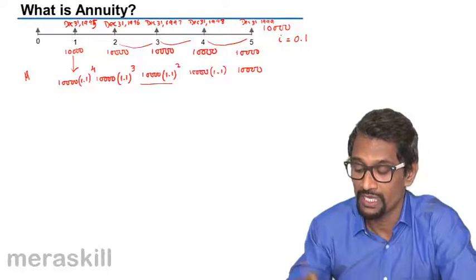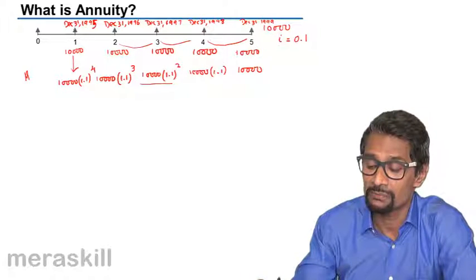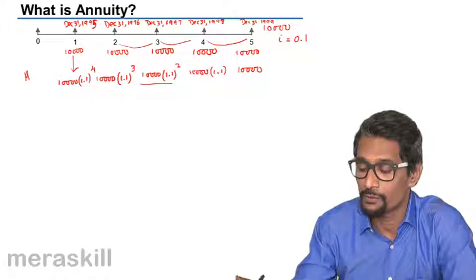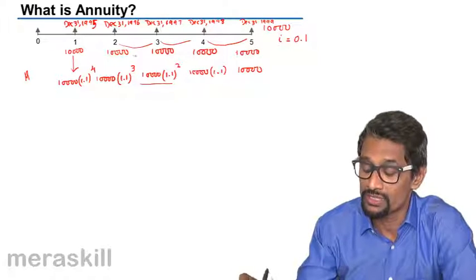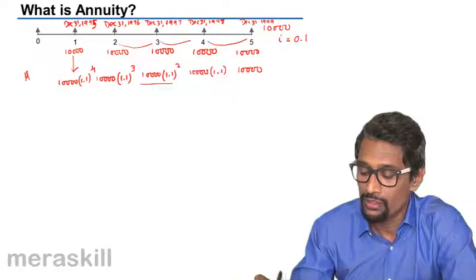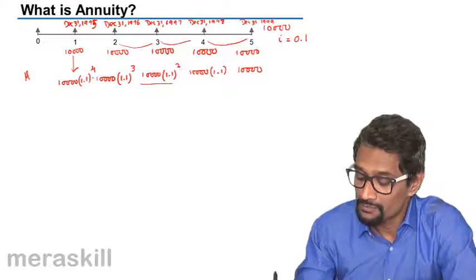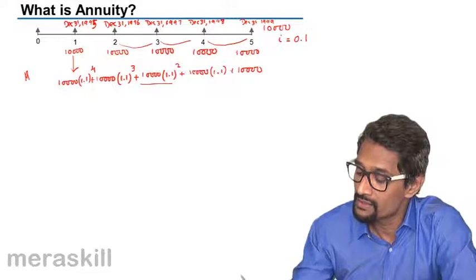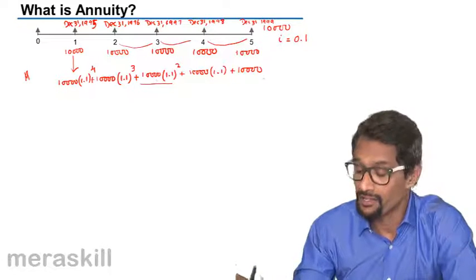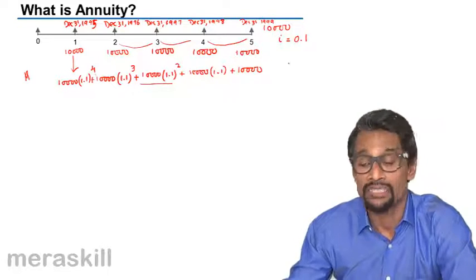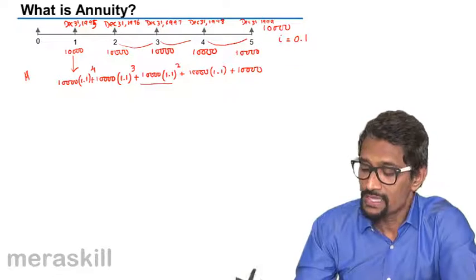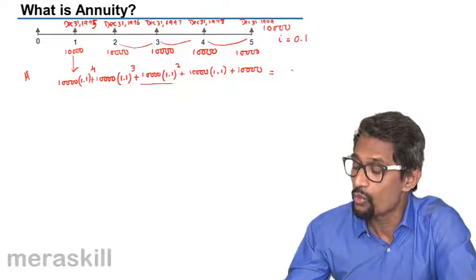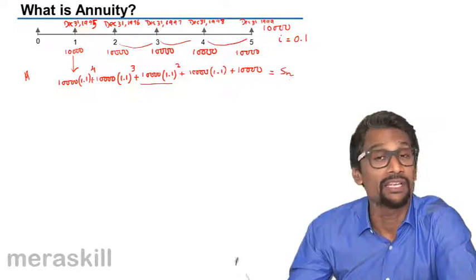So the dates run: 1998, 1997, 1996, and 1995 — sorry, that should be 1995. Starting from December 31st 1995, at the end of one year, for a period of five years, we keep depositing ten thousand rupees. The accumulated amount of all these is what you get at the end of the entire five-year tenure.